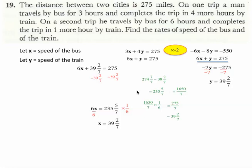In any case, so here's our answer. The speed of the bus and the speed of the train are both 39 and two sevenths miles per hour. What fun. Have a good day.